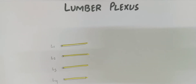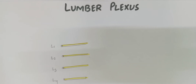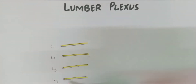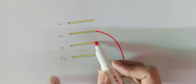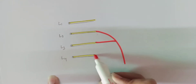Today I will tell you about the lumbar plexus. The lumbar plexus includes L1 to L4 lumbar vertebrae. The dorsal divisions of L2, L3, and L4 give off a nerve known as the femoral nerve.